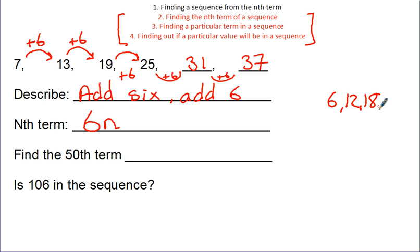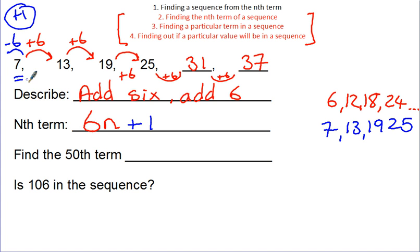So, 6, 12, 18, 24, etc. Now, looking at our sequence, we don't have 6, 12, 18, 24. But we have something very similar. We have 7, 13, 19, 25. So, you should see that this is one more than the 6 times table. So, we just need to add 1 at the end of the nth term. Another way to remember that is you can either go backwards. So, you can take away 6 from the first term. So, 7 take away 6 would give you 1, which is the same as down here. Or you can think, right, I don't want to start my sequence at 6. I want to start my sequence at 7. Therefore, I need to add 1 on.